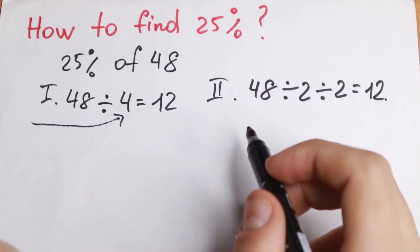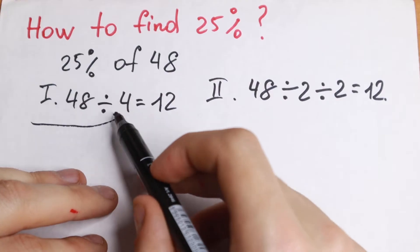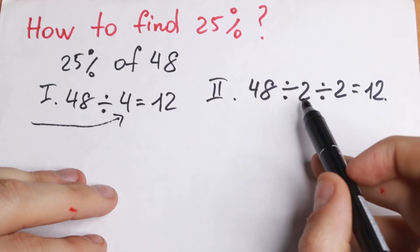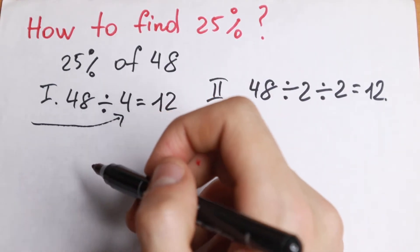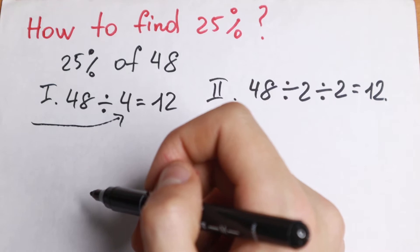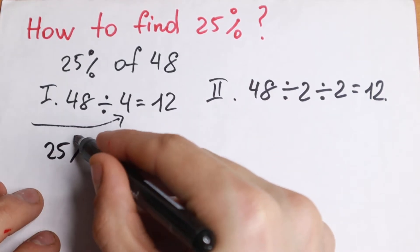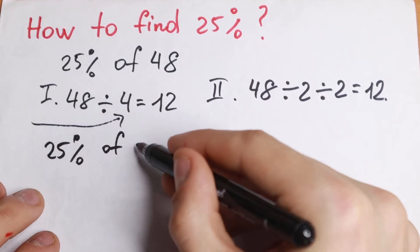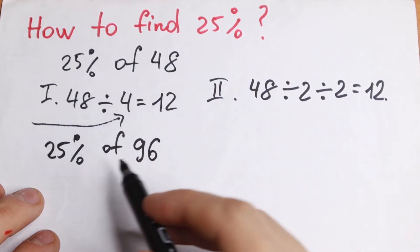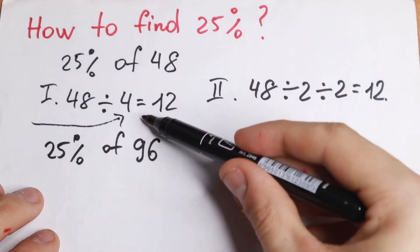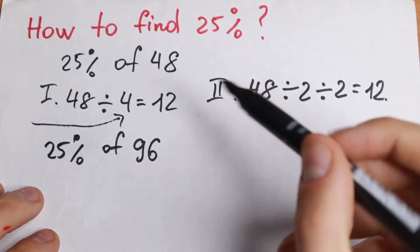A lot of students know this rule, but I want to show you dividing by 4 and dividing by 2 two times. Let's use one small example — find 25% of 96. You can choose to divide by 4 or divide by 2 two times.